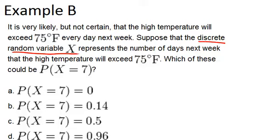So first let's talk about this notation. First of all, X is often the variable that is used for discrete random variables in probability, and it's usually a capital letter. So we're looking for the probability that X equals 7. So if X represents the number of days next week that the high temperature will exceed 75 degrees, then this is saying what's the probability that X equals 7? So the probability that the number of days that the temperature is more than 75 degrees is 7 days.